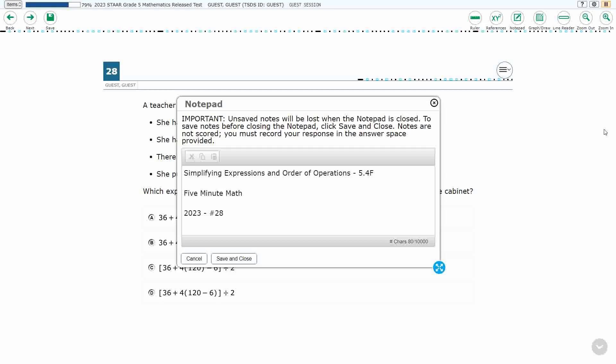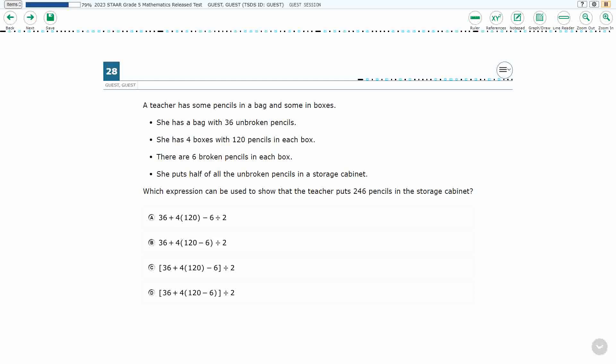Hello and welcome to 5-Minute Math. Today we are looking at the 5th grade concept of simplifying expressions and order of operations. This is Standard 5.4F in the great state of Texas and we are using item number 28 of the 2023 released STAR test.